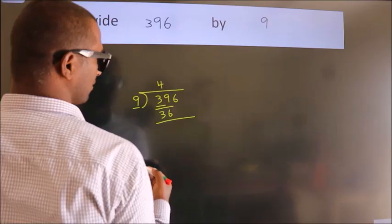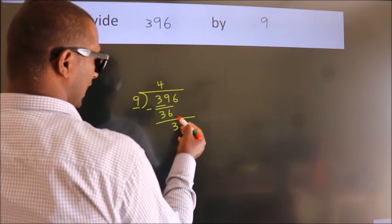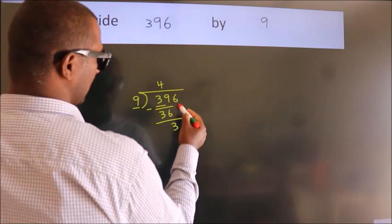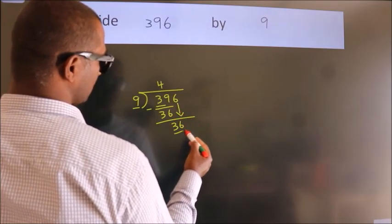Now we should subtract. We get 3. After this, bring down the next number. So 6 down. So 36.